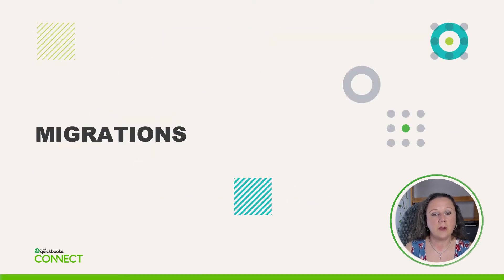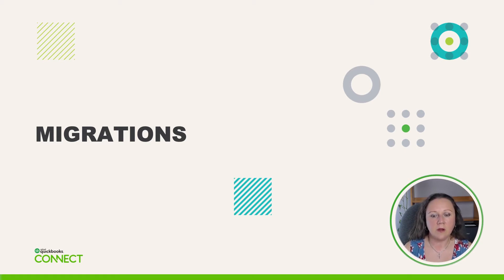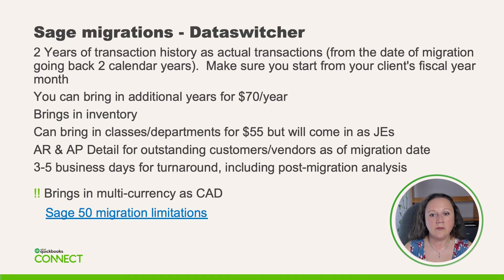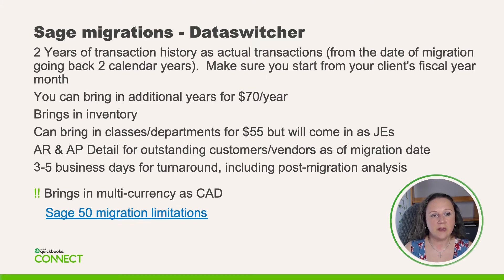Now we're going to talk about our new process for migrations. Sage migrations and our Xero migrations as well are done by a third party out of the Netherlands called Result. They have created this tool named Data Switcher. Data Switcher allows us to import approximately two years of transactional history as actual transactions. It includes the migration date and goes back two calendar years.